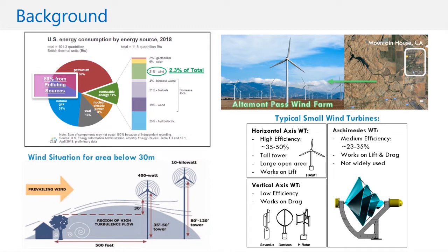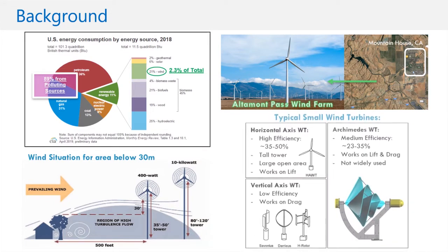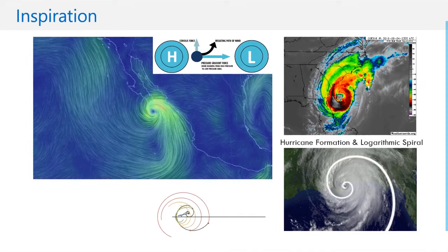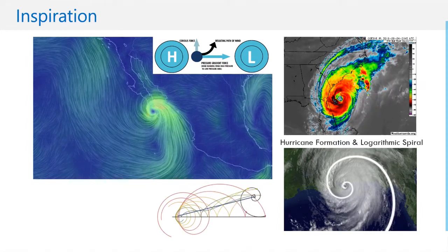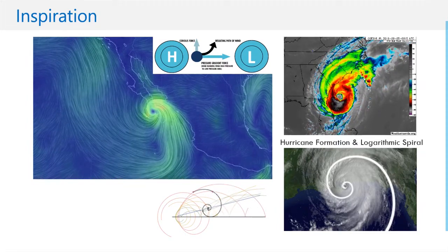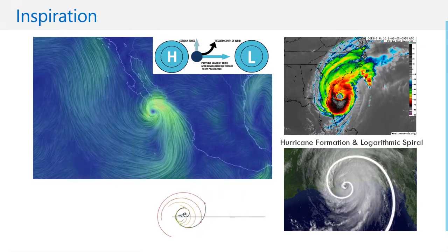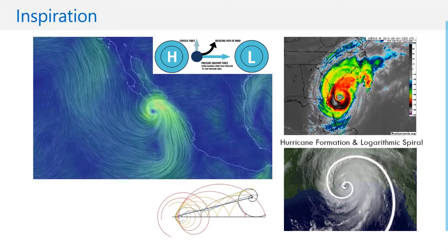This is why small-scale wind turbines are not very effective, except for the Archimedes wind turbine, but it's not commonly used. Hurricanes are very unique storms, as they implement the naturally occurring logarithmic spiral in its spiral ring bands as the path of least resistance.